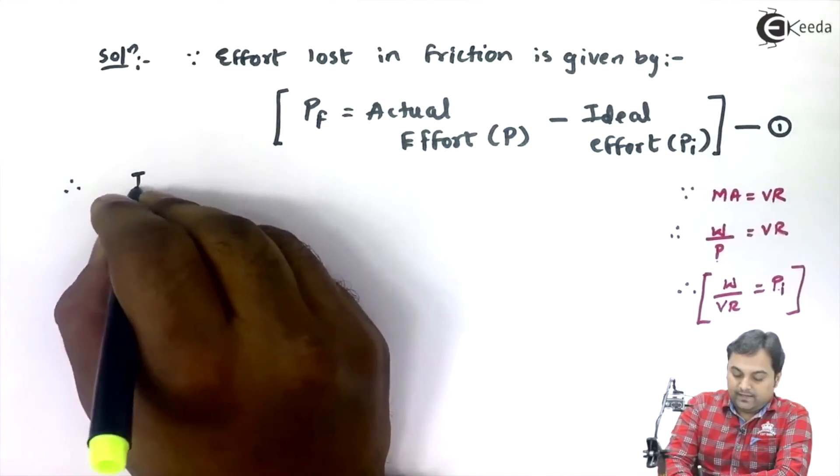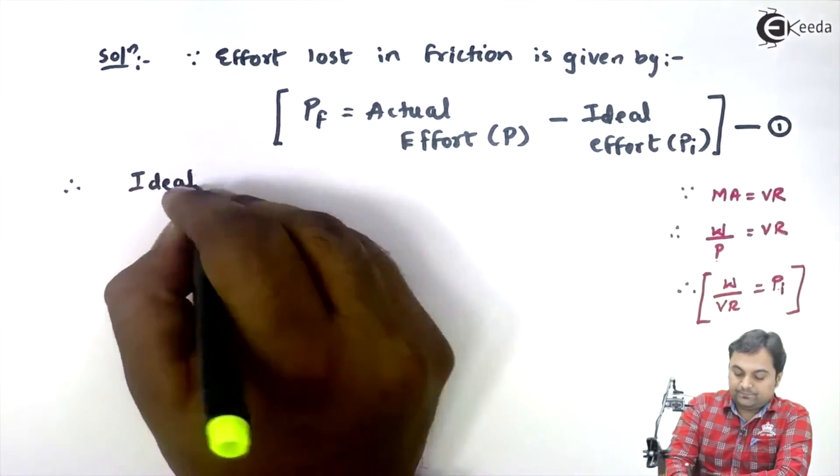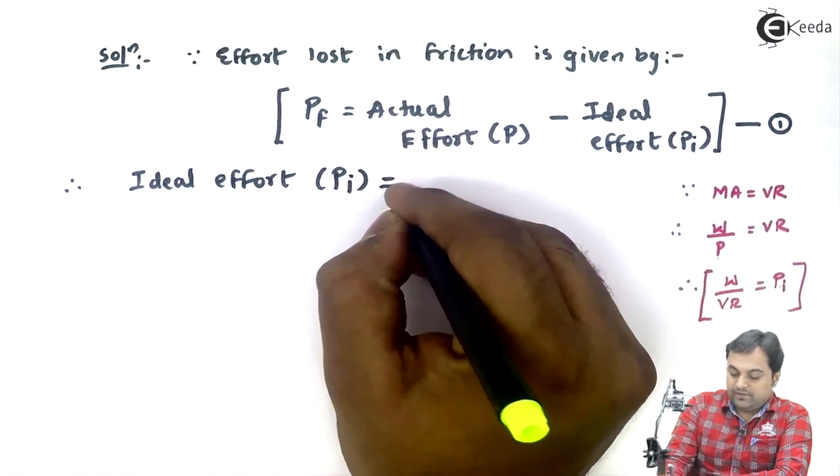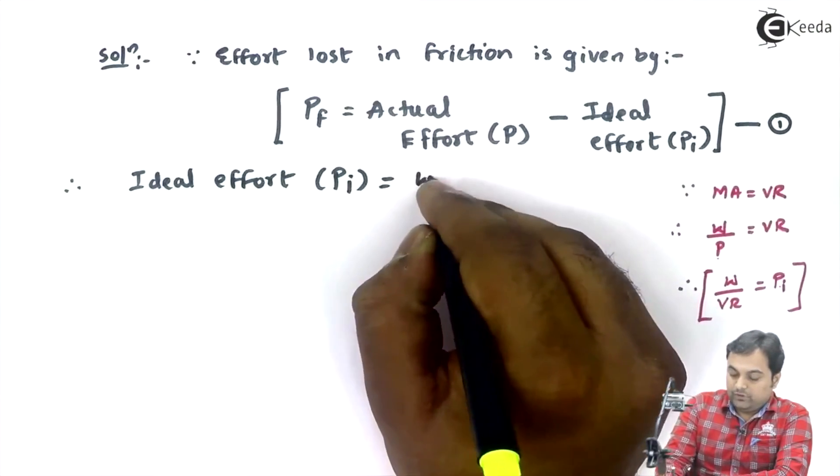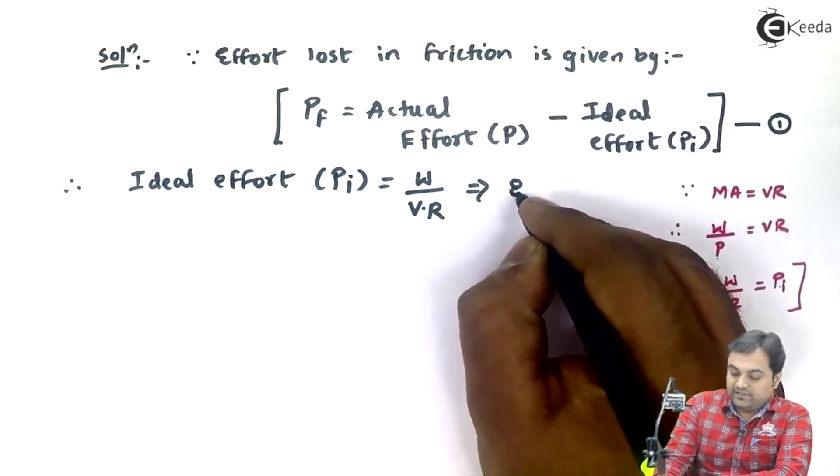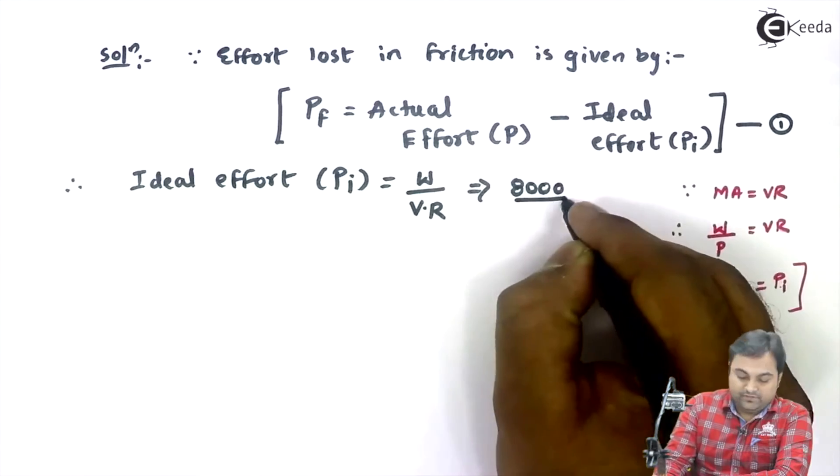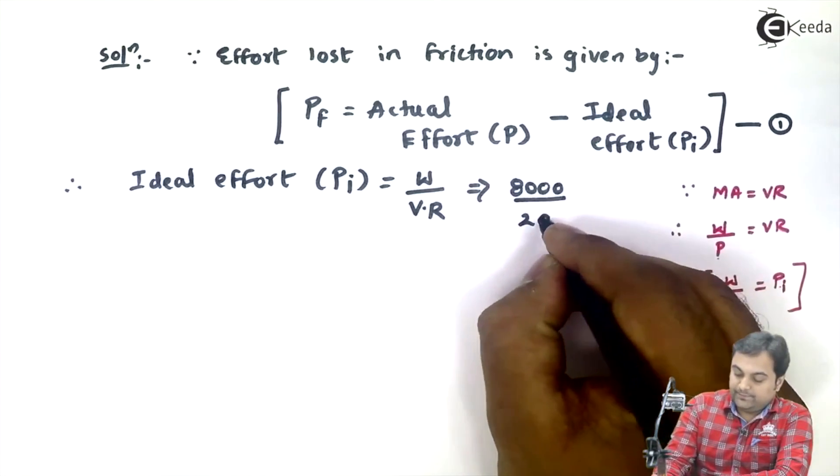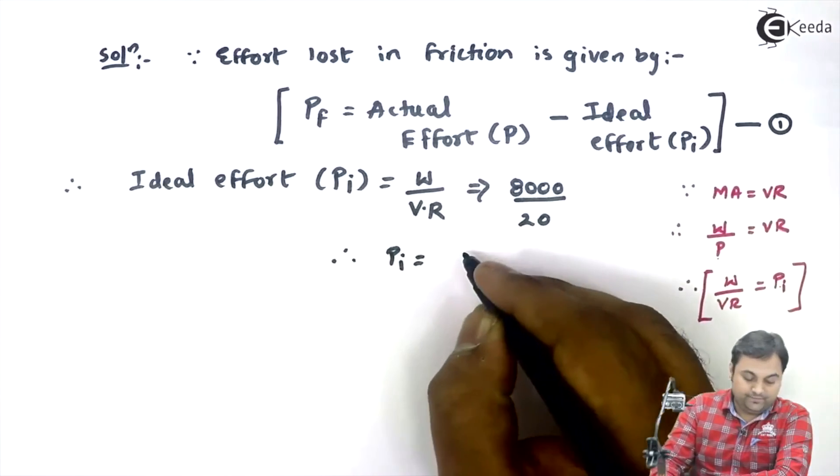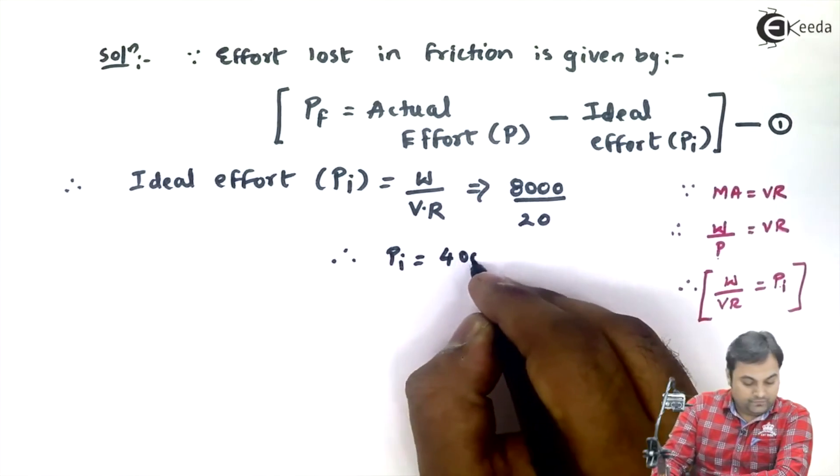So by using this formula, I will calculate ideal effort first. Therefore, ideal effort P suffix I is equal to load upon velocity ratio. Load is given as 8,000 Newton divided by velocity ratio is 20. Therefore, ideal effort comes out to be 400 Newton.